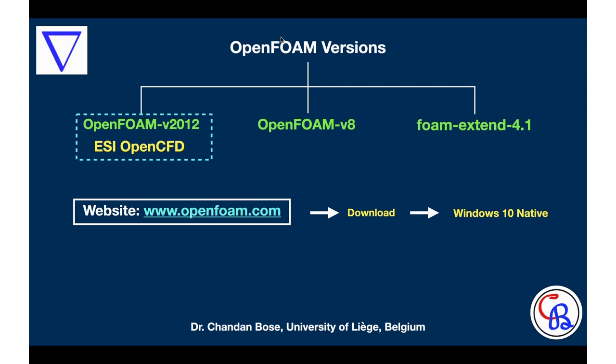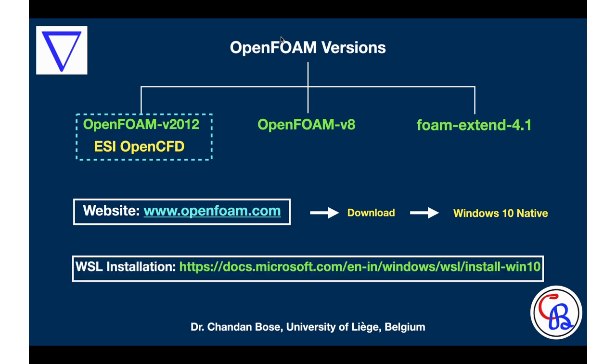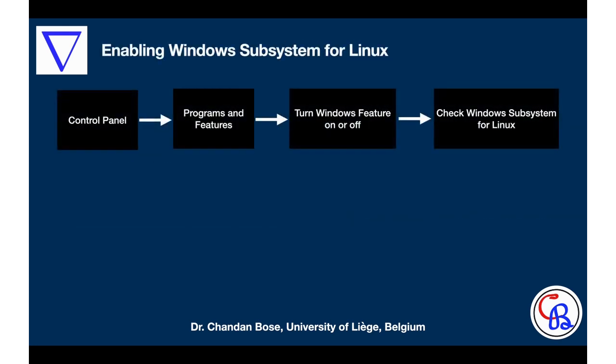The first step is to enable the option of Windows Subsystem for Linux. There is a dedicated web page from Microsoft on the procedure of enabling this WSL option on Windows 10. There are two ways of enabling this option. The easiest option in my opinion is to do it through your Control Panel. If you go to your Control Panel there will be a Programs option, and within that you will find Programs and Features.